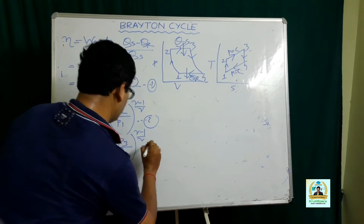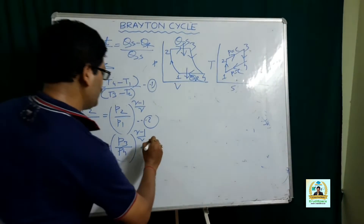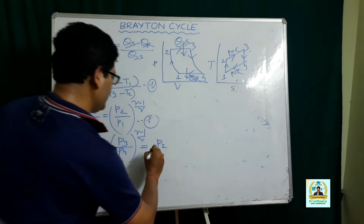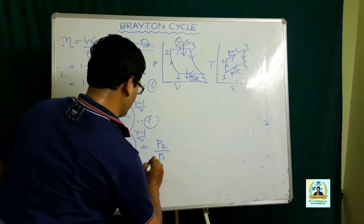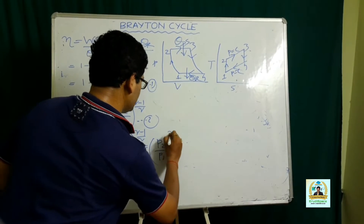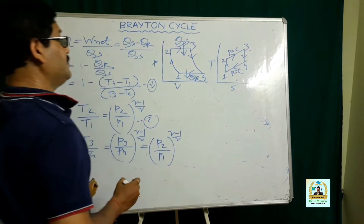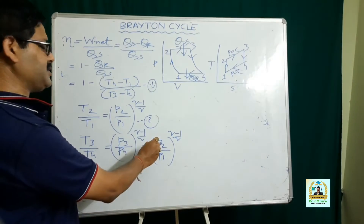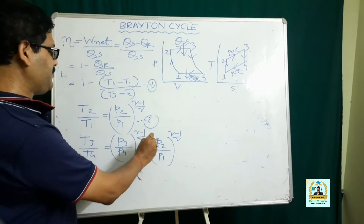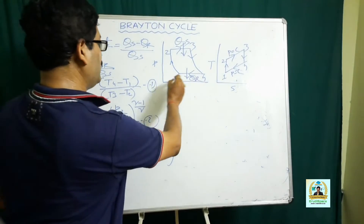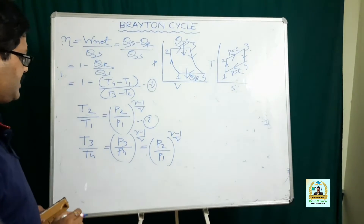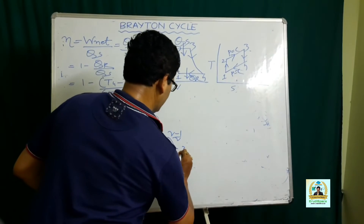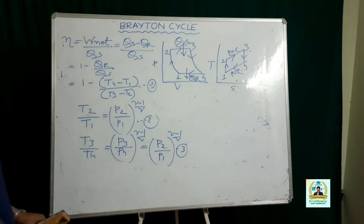In equation 3, we substitute T3 with T2 and T4 with T1, because process 2-3 is a constant pressure process, so T3 corresponds to T2, and process 4-1 is also a constant pressure process, so T4 corresponds to T1. So from equations 2 and 3 we get T2/T1 = T3/T4.